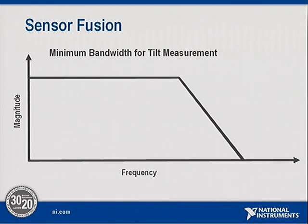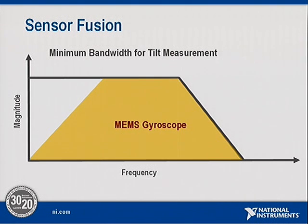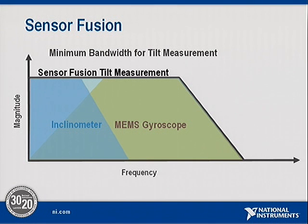Our simulations indicated that we needed a high-bandwidth tilt sensor in order to control the vehicle. Unfortunately, no single inertial sensor could provide the bandwidth we needed. A MEMS gyroscope could satisfy our higher frequency needs, while a capacitive inclinometer would meet our low-frequency response needs. We designed and verified, through simulation, a method of fusing these two measurements together.